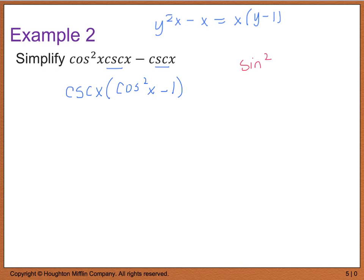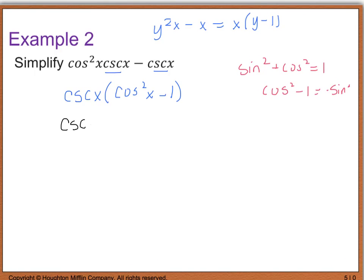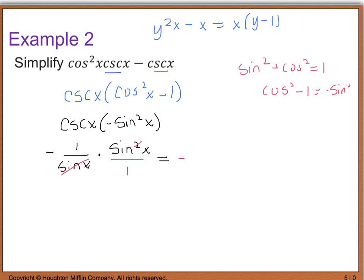Rearranging sine squared plus cosine squared equals 1 to isolate cosine squared minus 1, we get negative sine squared. So we rewrite as cosecant x times negative sine squared x. Since cosecant is 1 over sine x, multiplying gives negative times 1 over sine x times sine squared x. The sine terms cancel, leaving negative sine x. That is as far as we can simplify this expression.